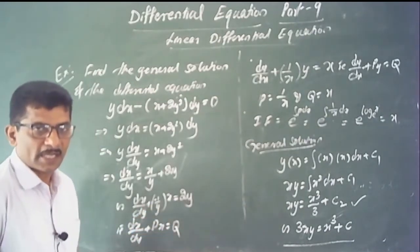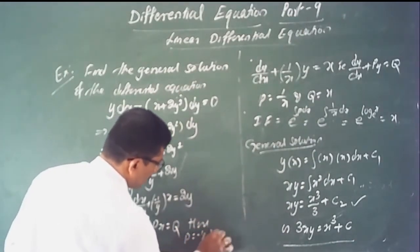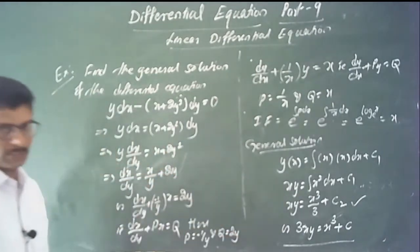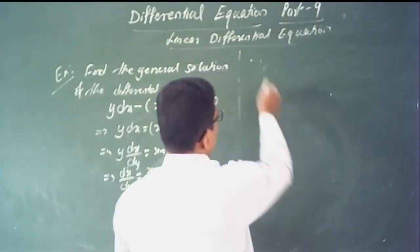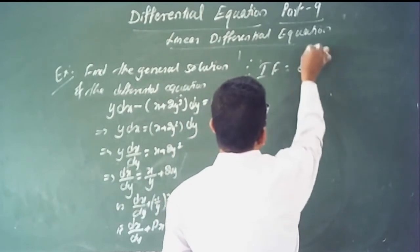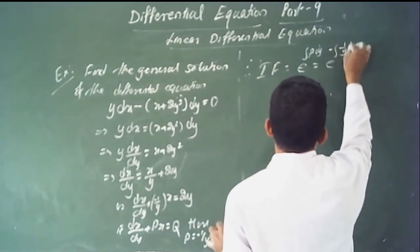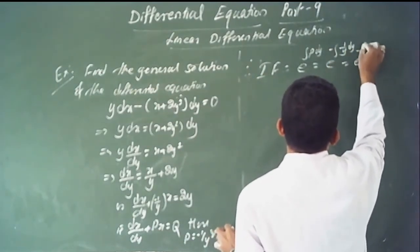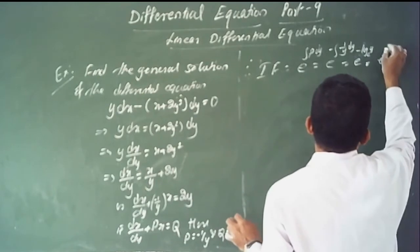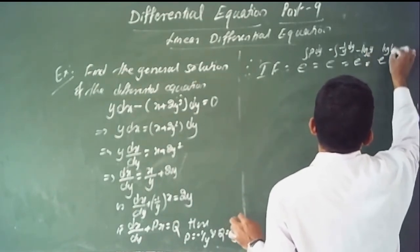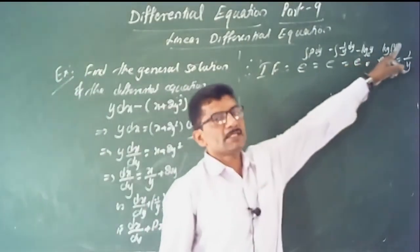Rearranging: dx/dy minus 1/y times x equals 2y, which is in the form dx/dy plus p times x equals q. Here p equals minus 1/y and q equals 2y. The integrating factor is e to the power of the integral of minus 1/y dy, which equals e to the power of minus log y, equals e to the power log(y to the minus 1), giving 1/y.